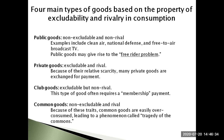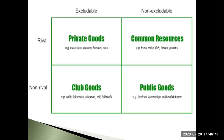Through the following diagram, we can compare and contrast the properties that each of these four goods possess. Private goods are both excludable and rival — examples include ice cream, cheese, houses, and cars, which are usually goods that people need to pay for. Non-excludable and rival goods constitute common property resources such as fresh air, fish, timber, and pasture. Excludable and non-rival goods include club goods for which membership payments need to be made — these include cable television, cinemas, Wi-Fi, and toll roads. Finally, non-excludable and non-rival goods constitute public goods, for which government interventions are usually necessary — these include fresh air, knowledge, and national defence.